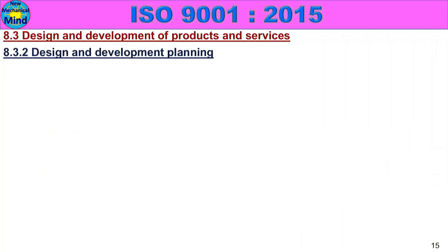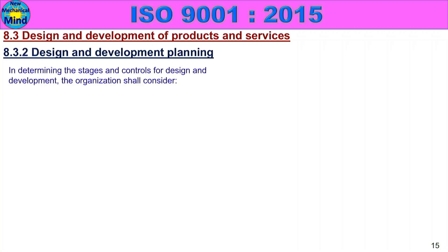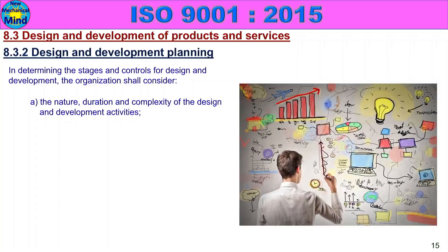Next, 8.3.2 Design and Development Planning. In determining the stages and controls for design and development, the organization shall consider design and development activities. They will consider the nature, duration and complexity of the design and development activities.